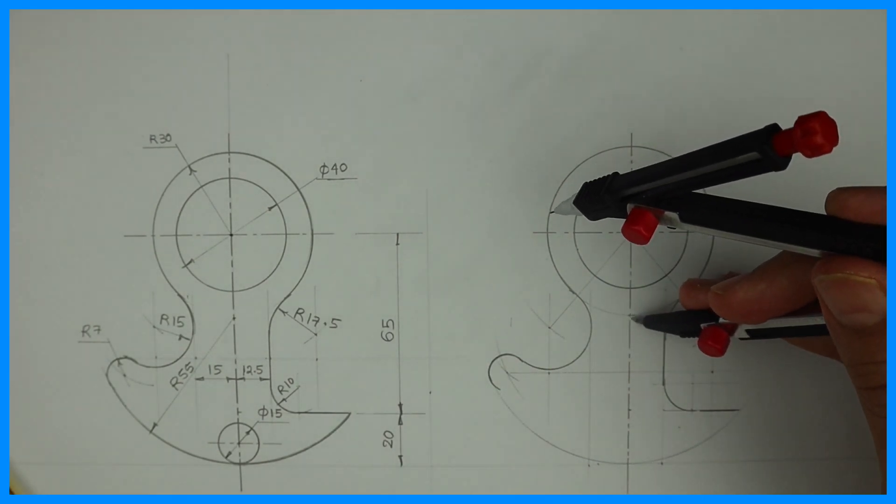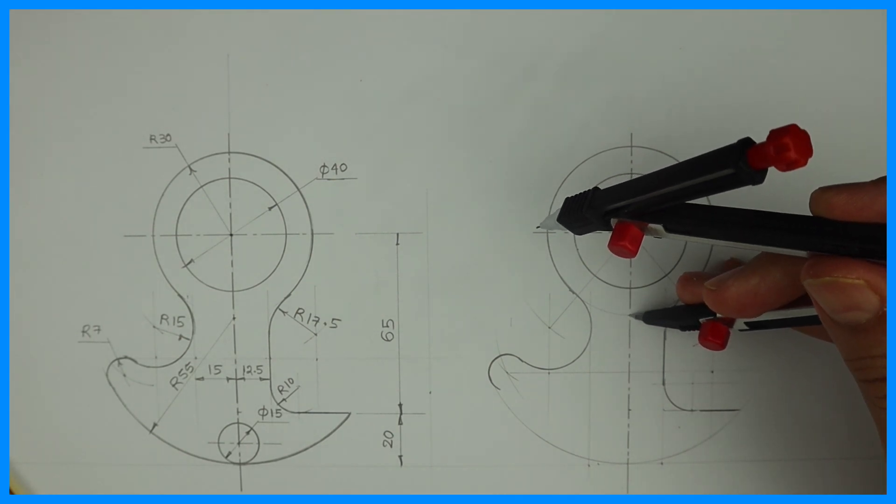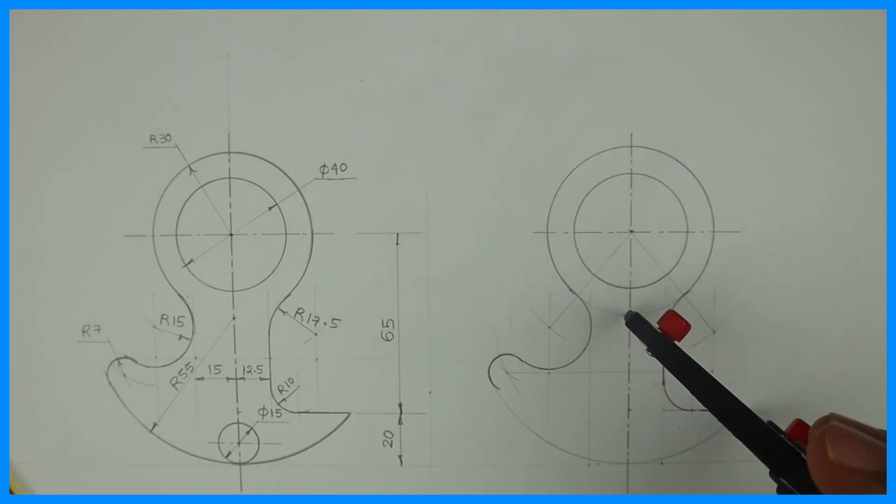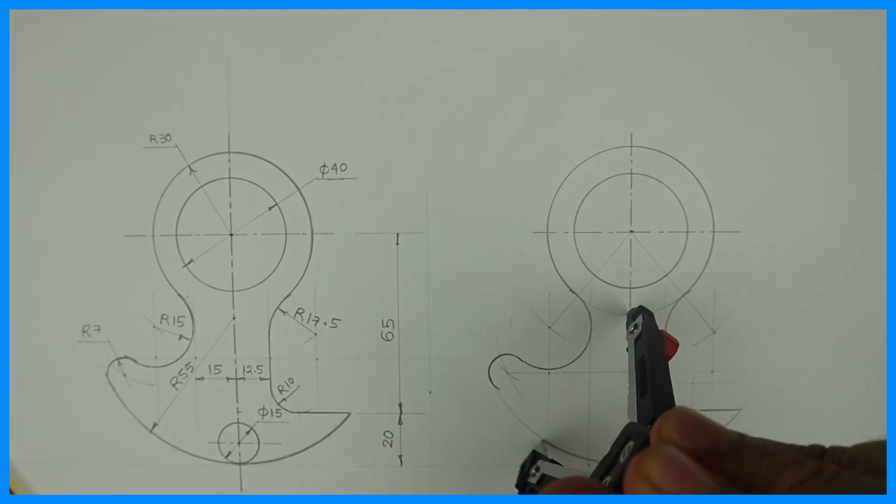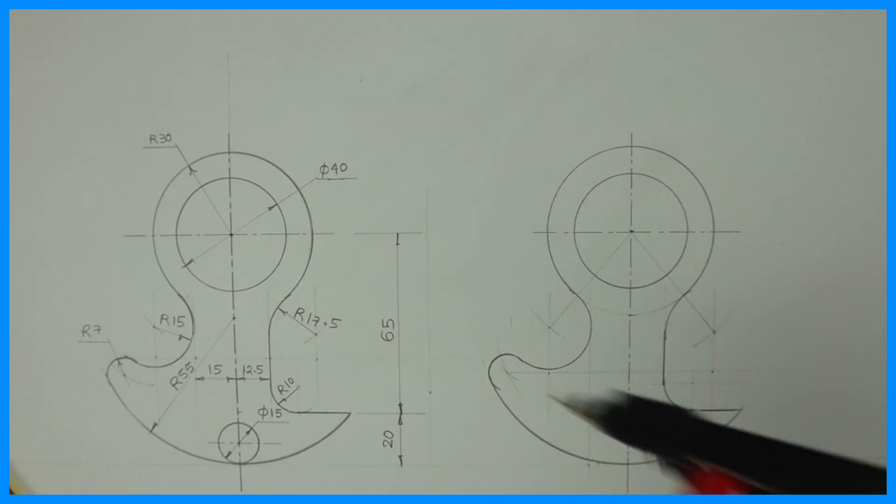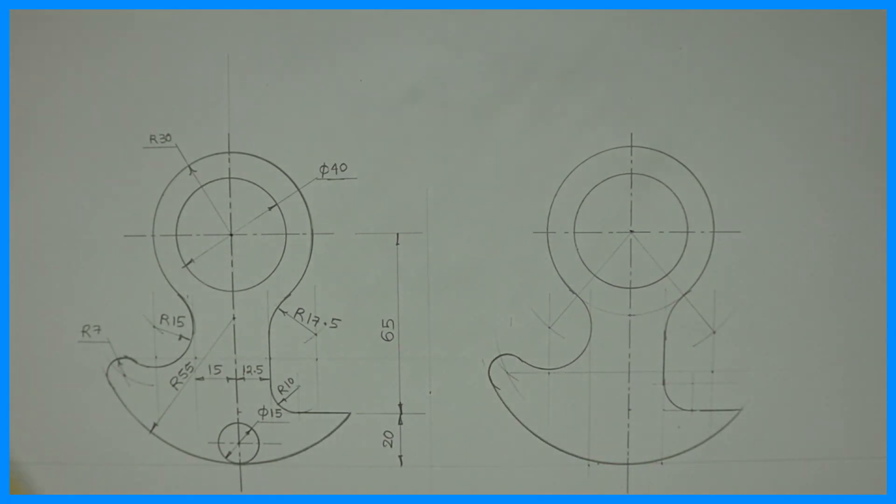Now one more circle is remaining. This we can draw dark, radius 55. Now if you see, diameter 15 is remaining. So that we can take 7.5, radius 7.5, and we can draw.